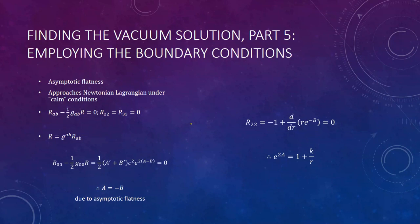Part five is to employ the boundary conditions. Our conditions being asymptotic flatness, that it approaches the Newtonian Lagrangian under calm conditions—not being close to a black hole and not moving near the speed of light, being what I consider to be calm. We will also say that it being a vacuum solution is again a boundary condition, and it will set these elements of the Ricci tensor to zero. The reason for this being that the curvature will not change as you move purely along an angular vector.